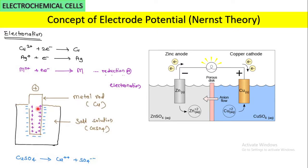This tendency of metal ions or cations to deposit on the metal electrode, leaving behind electrons in the solution, is called osmotic pressure. Due to electrostatic forces, an electrical double layer is set up around this electrode and it is called the reduction potential.